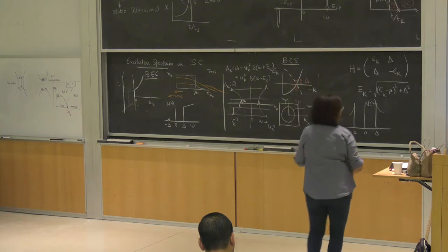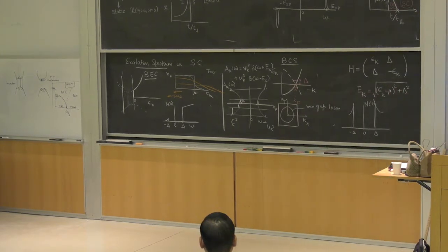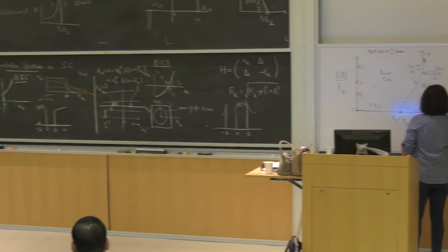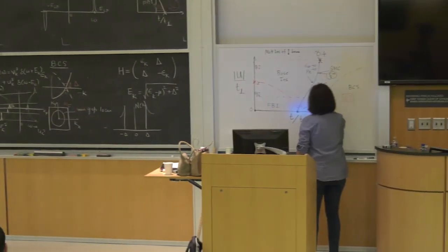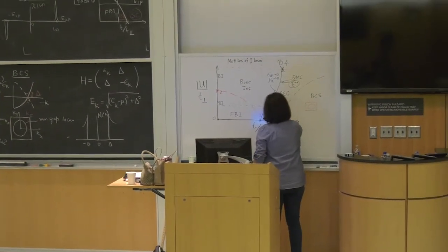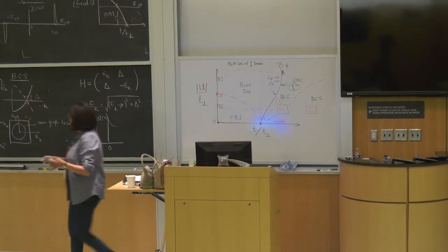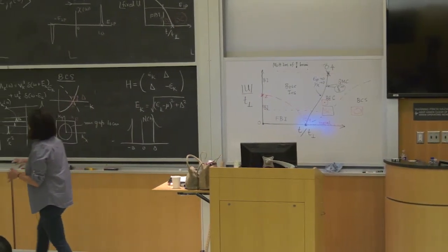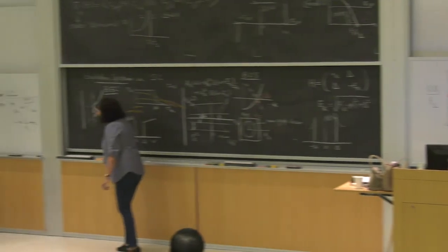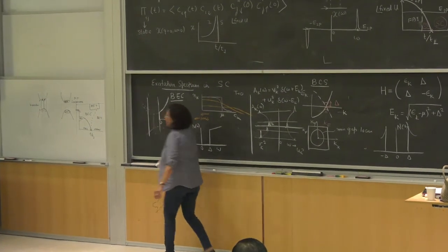So now you have the full picture. About the spectrum: in the BCS case you get this contour, and in the BEC case you get basically a Fermi point — Bose condensation at k equals zero, and the minimum gap is happening at the gamma point.